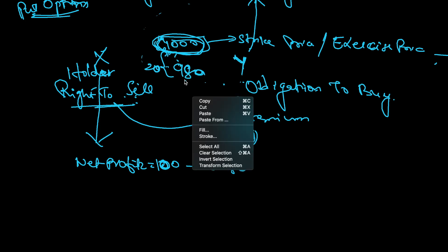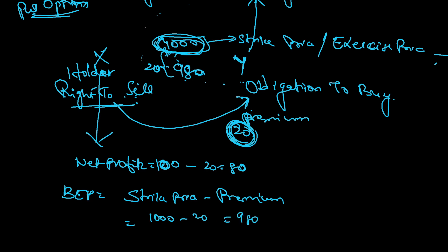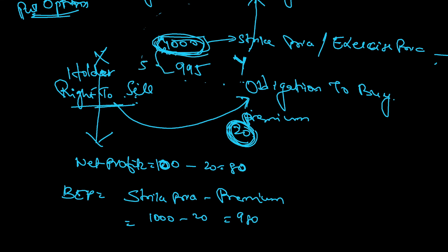The breakeven point formula is: strike price minus premium. Strike price is 1000 minus premium of 20 equals 980. So the breakeven point is 980. For example, if the spot price is 995, the holder will sell for 1000 and incur 5 rupees profit, but having already paid 20 as premium, his net loss will be 15.